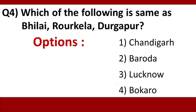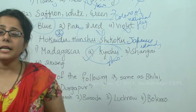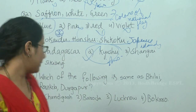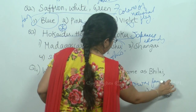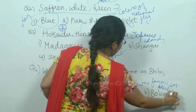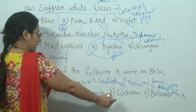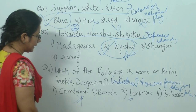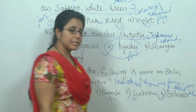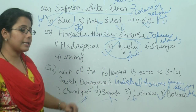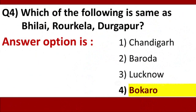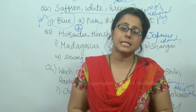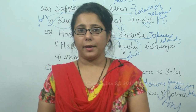Question 4: Which of the following is same as Bhilai, Rourkela, Durgapur? Options are: Chandigarh, Baroda, Lucknow, Bokaro. These places — Bhilai, Rourkela, and Durgapur — are industrial towns famous for their steel plants. Lucknow is not famous for a steel plant. Chandigarh is known as the clean city. Baroda also has no steel plant. Bokaro has a famous steel plant and is also an industrial town located in Jharkhand. So the answer is option 4, Bokaro.